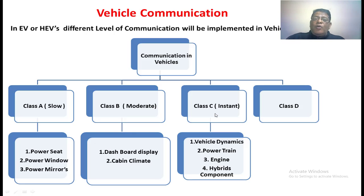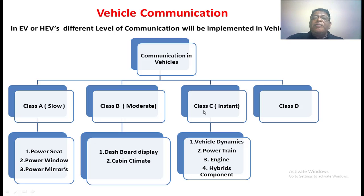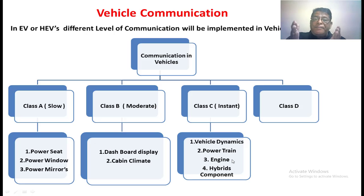Class C communication covers things related to the engine and acceleration. When we apply acceleration, the machine should respond very quickly at the same instant, and we pass that signal through Class C communication. Components include the powertrain, engine, and hybrid components. Similarly, if you apply braking and the brakes respond after some delay, an accident could occur. Therefore, battery, powertrain, and vehicle dynamics — all things that must occur instantaneously — are kept under Class C communication.